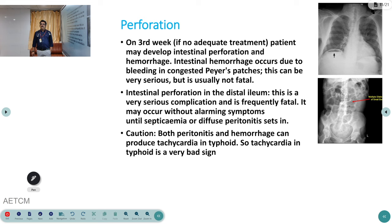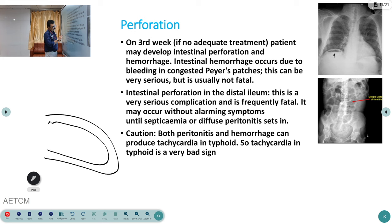Another important finding in the oral cavity is white coating of the tongue throughout its entire surface — this is a very classical finding in typhoid fever. Relative bradycardia and coating of the tongue are both very important clinical signs in typhoid.